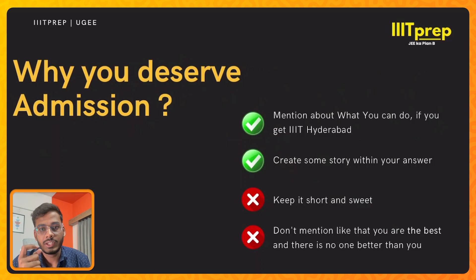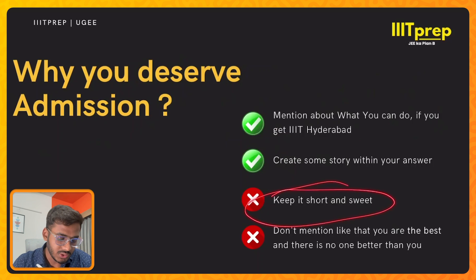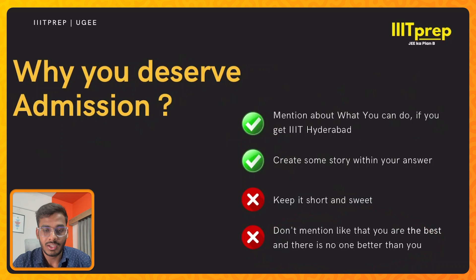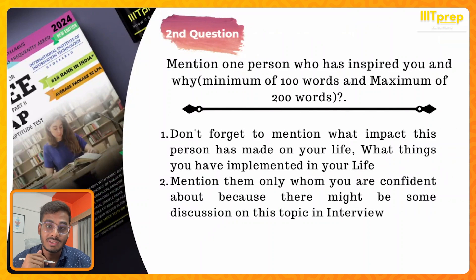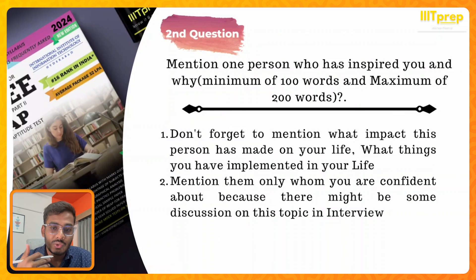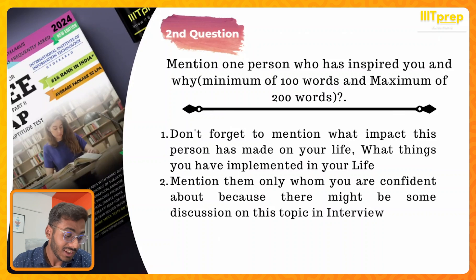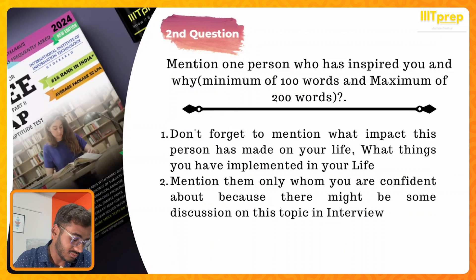Keep your answer short. Don't mention that you are the best — that's not what they expect. They want a student who has a learning attitude, not someone who thinks they know everything. If you know everything, why would you come to IIT? So that's secondary. Now talking about the second question.